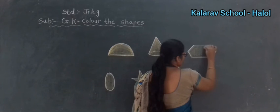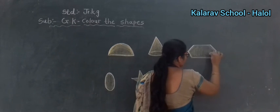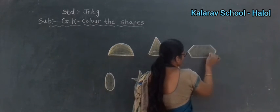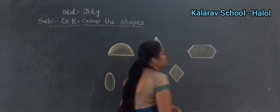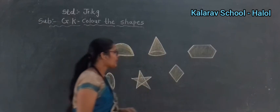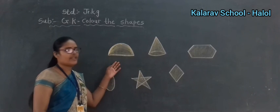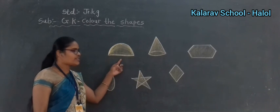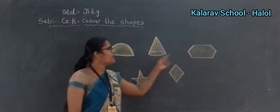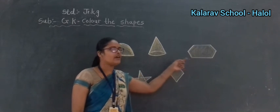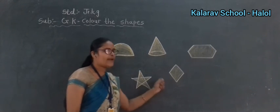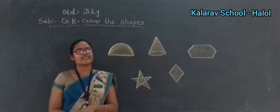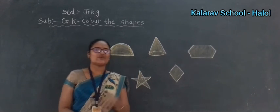So, children — understood? These are all the shapes. Complete. Once again: semi-circle, cone, hexagon, oval, star, diamond. Understood? Thank you. Bye.